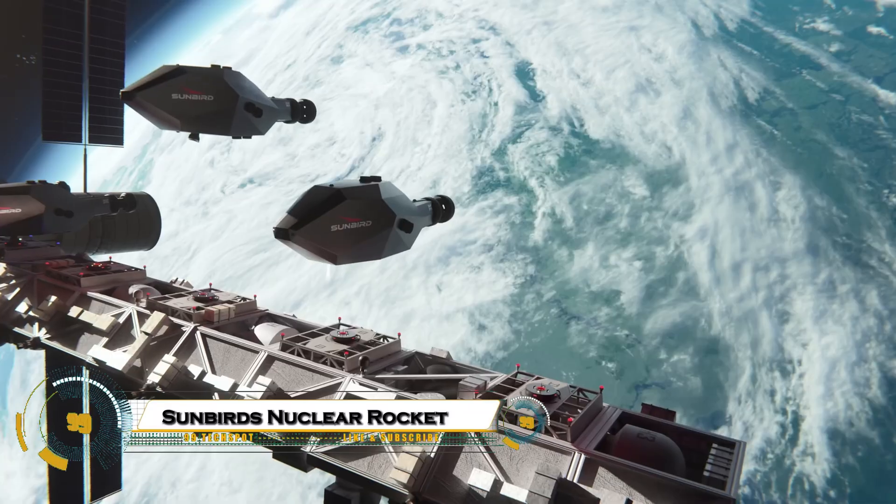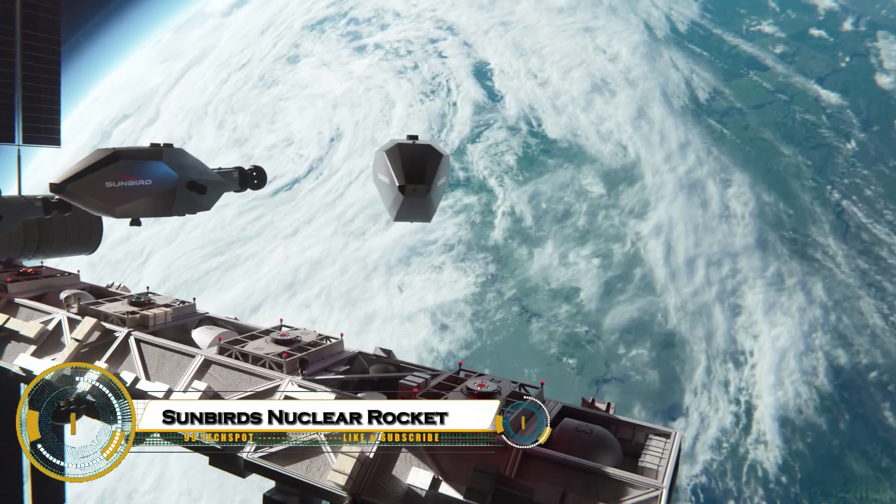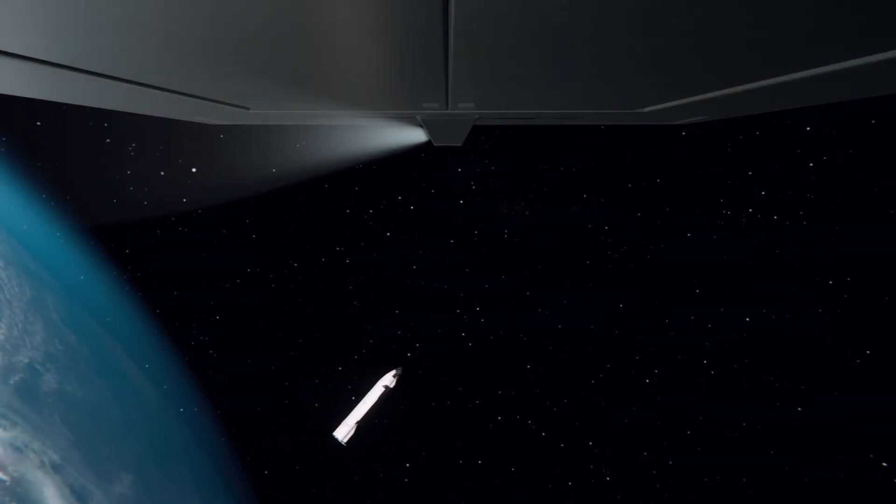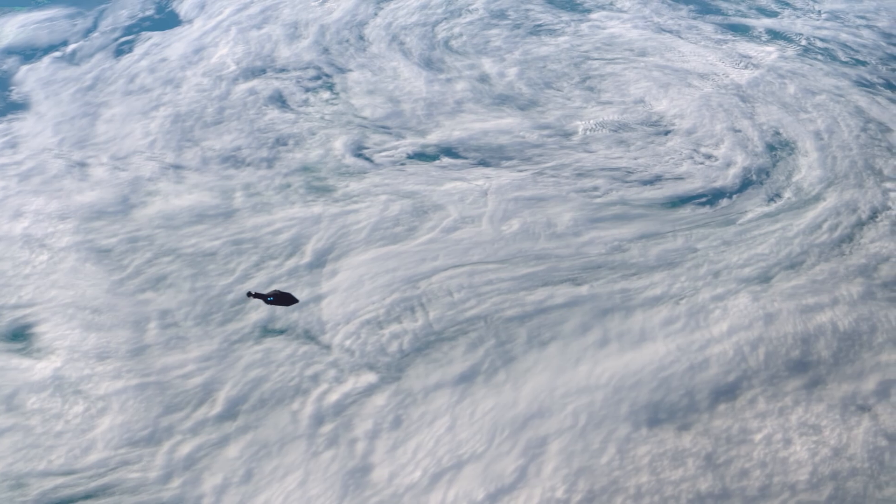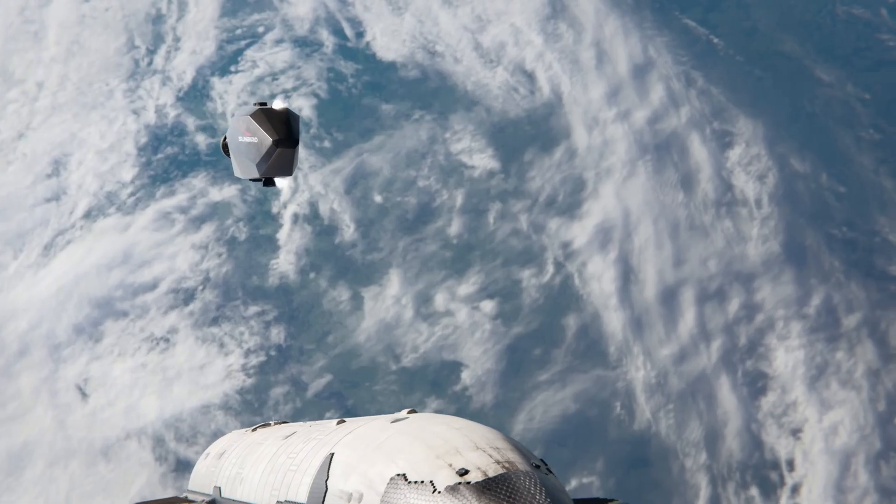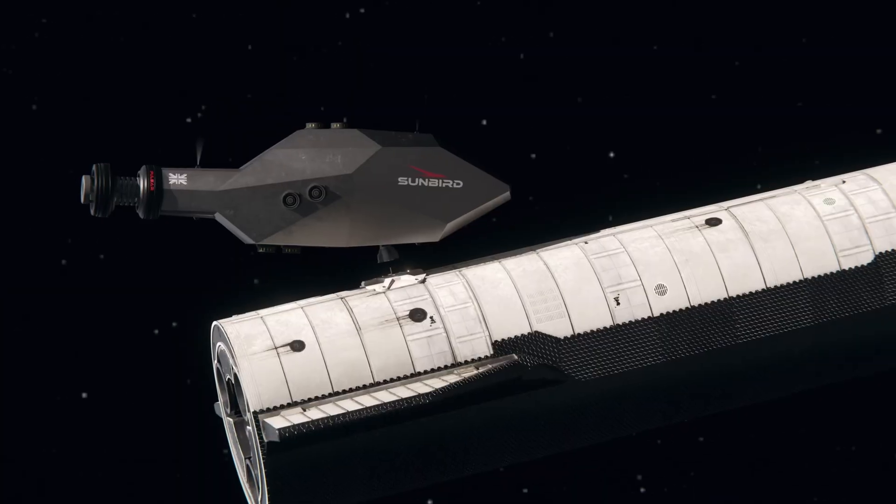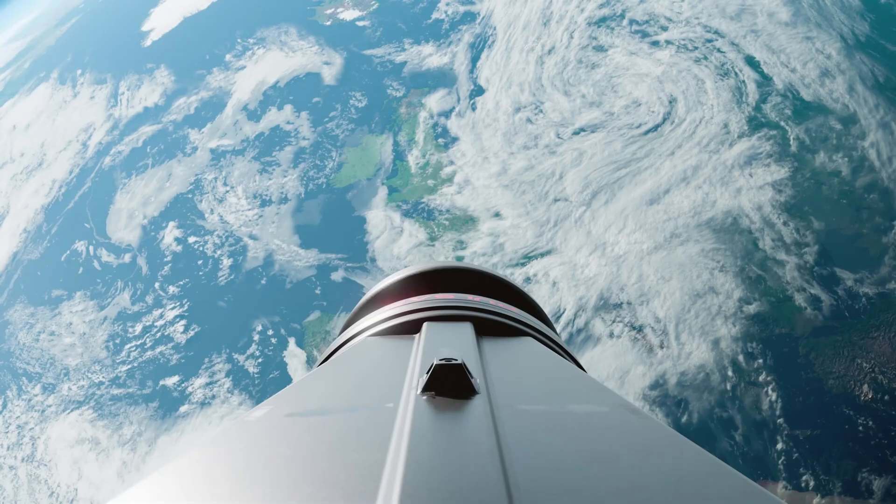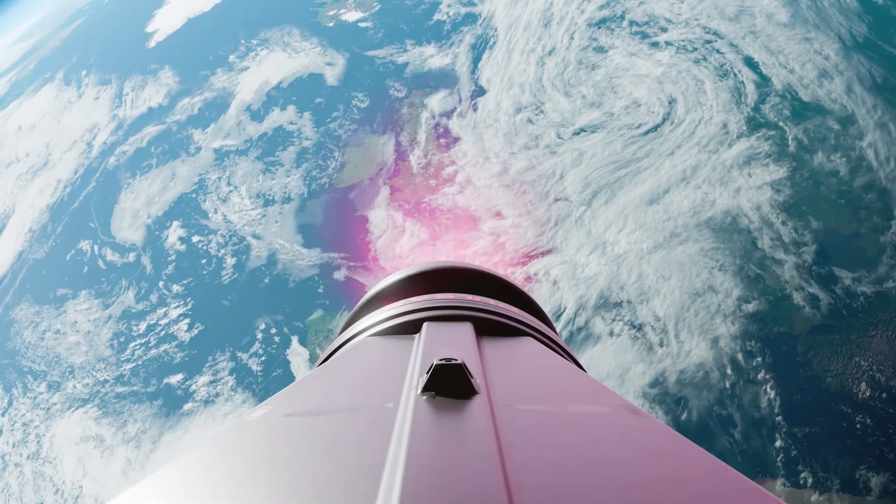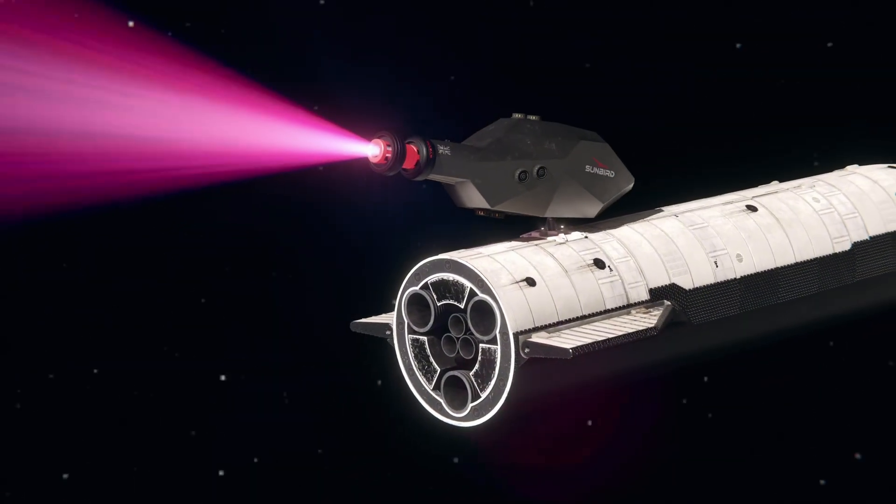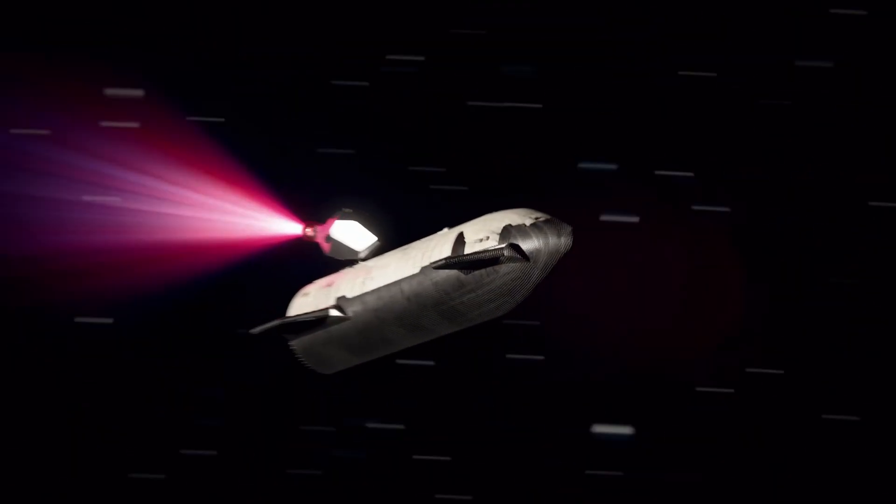Sunbirds is developing a revolutionary nuclear fusion rocket that could transform space travel by harnessing the same power fueling the Sun. Unlike chemical rockets or nuclear fission designs, this fusion engine creates thrust by fusing atoms together, releasing massive energy that could propel spacecraft at unprecedented speeds, potentially reaching Mars in weeks instead of months.